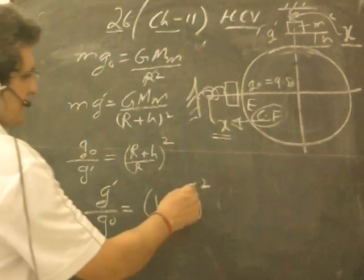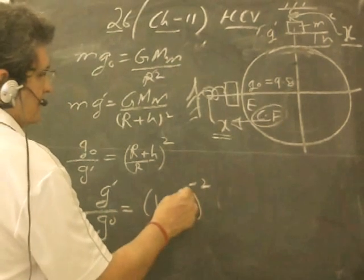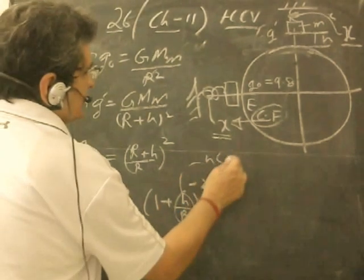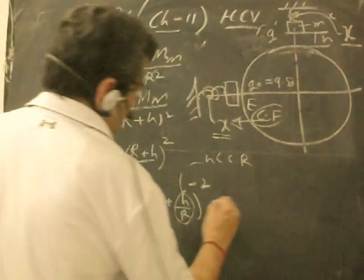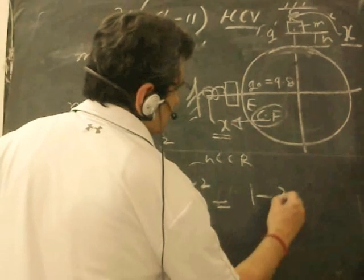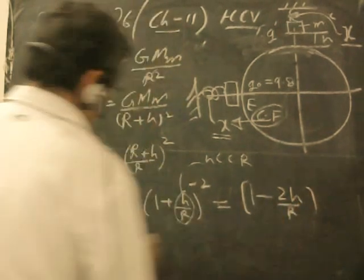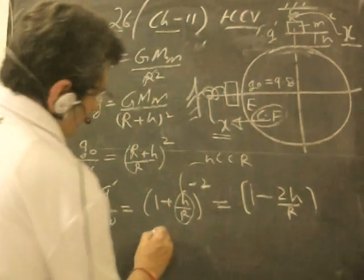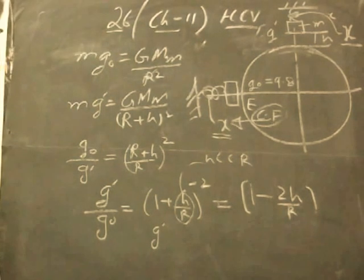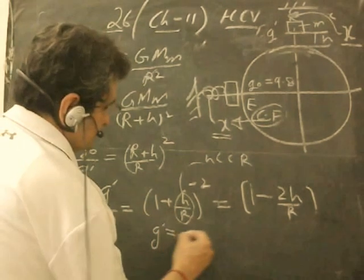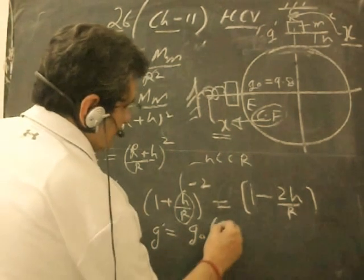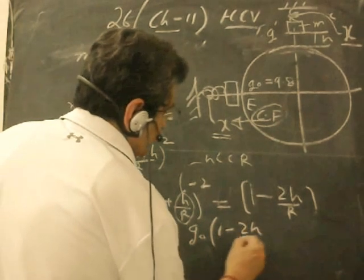Since this is a very small number, because h is very small in comparison to R, we apply the binomial relationship. It becomes 1 minus 2h/R, so g' is equal to g₀(1 - 2h/R).